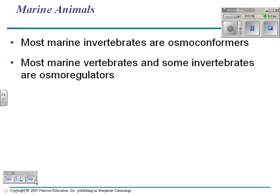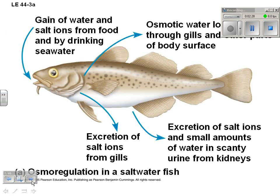If you think about a saltwater animal — a saltwater invertebrate — it's an osmoconformer. That means its internal environment equals its external environment, similar to how a thermoconformer matches external temperature. But most vertebrates, most fish, have to regulate the amount of water they have.